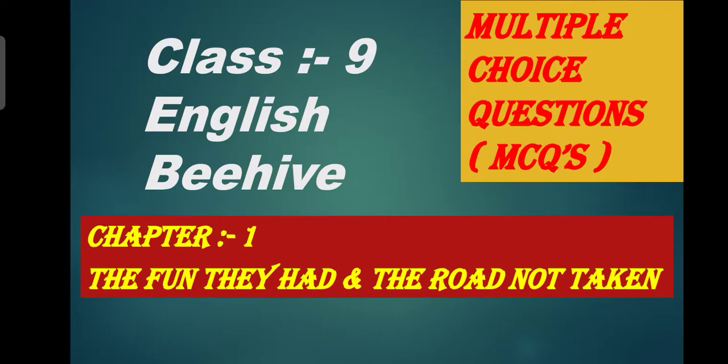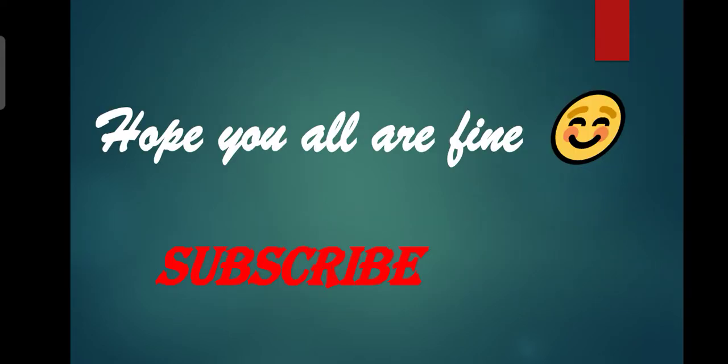Hello students, today we are going to cover Class 9th English Beehive Book Chapter 1 - 'The Fun They Had' and 'The Road Not Taken'. We are going to do multiple choice questions. Let's start. Hope you all are fine. Please subscribe to the channel right now and watch the video until the end.